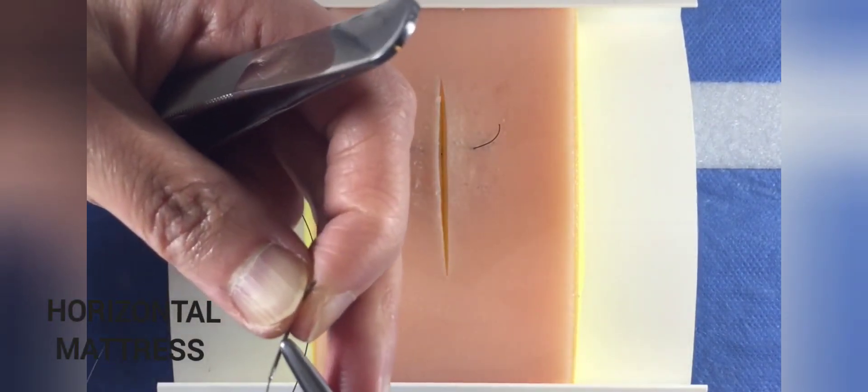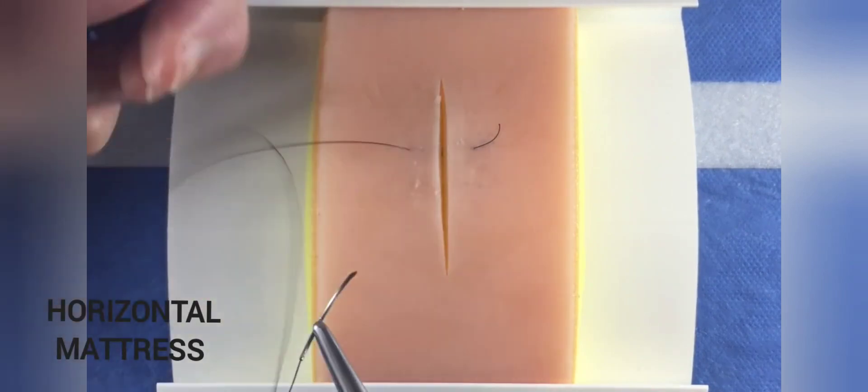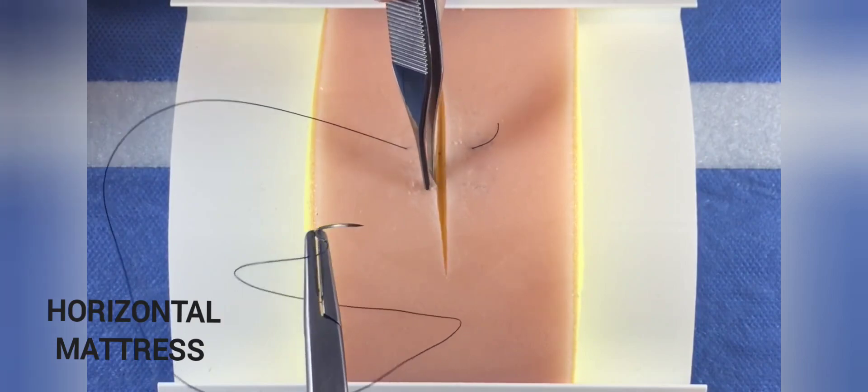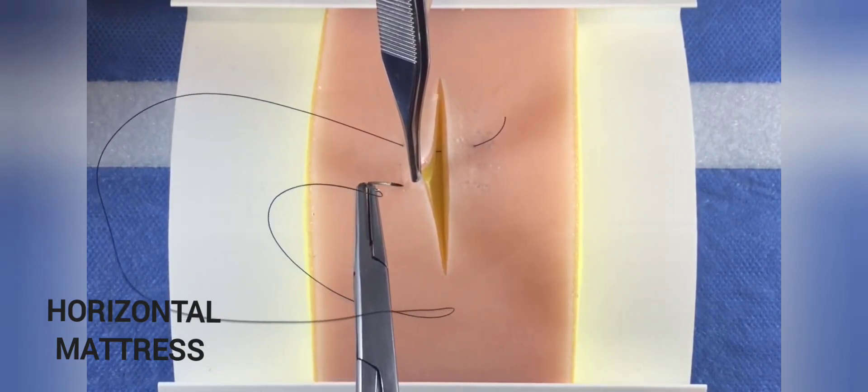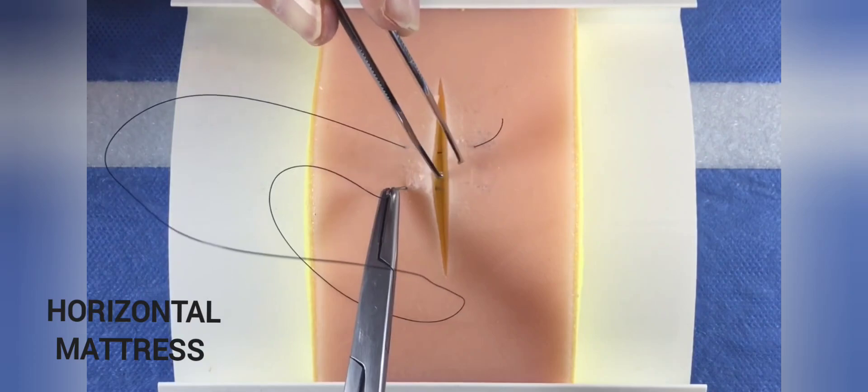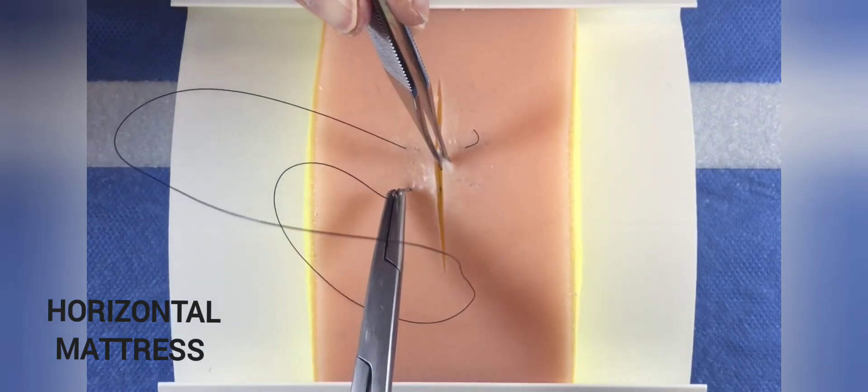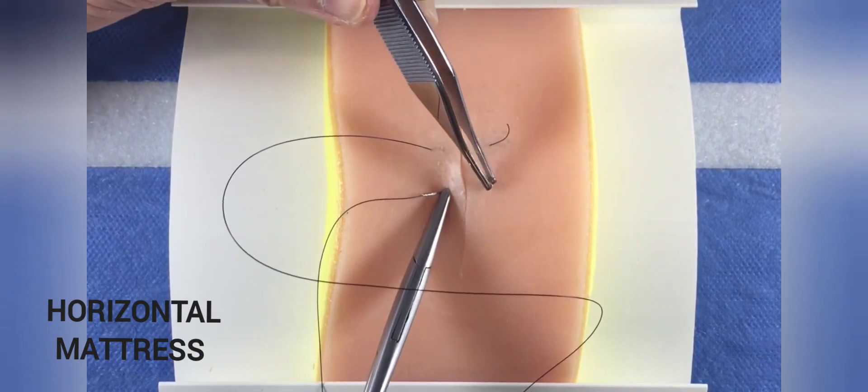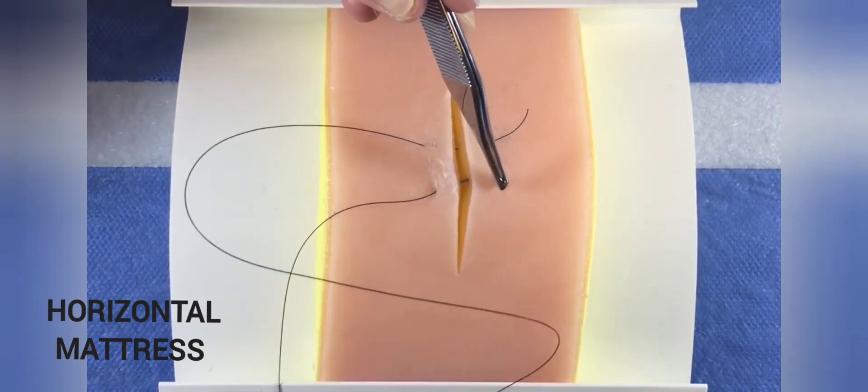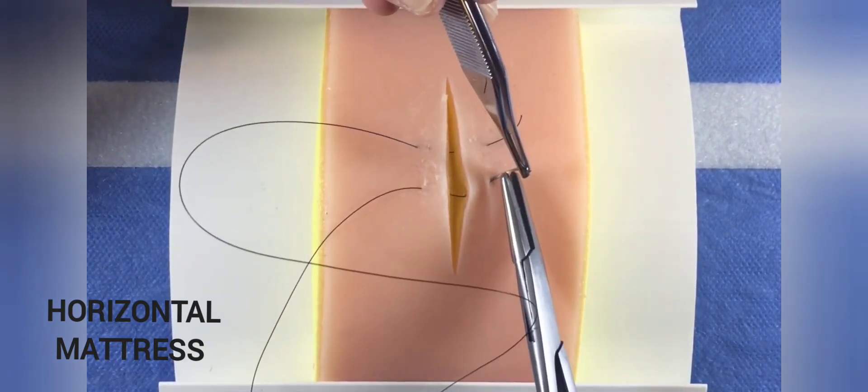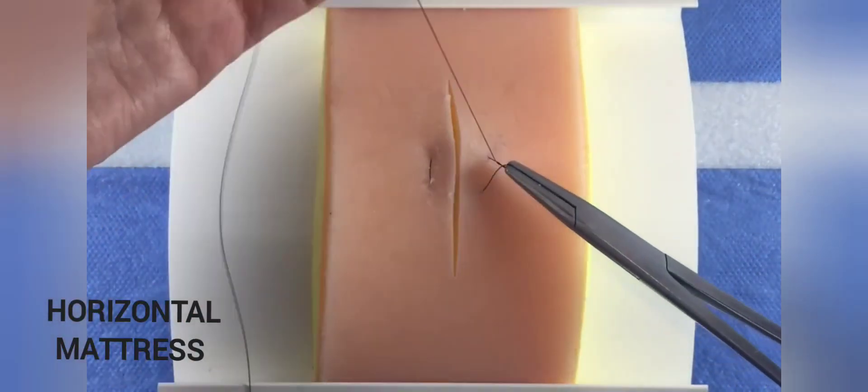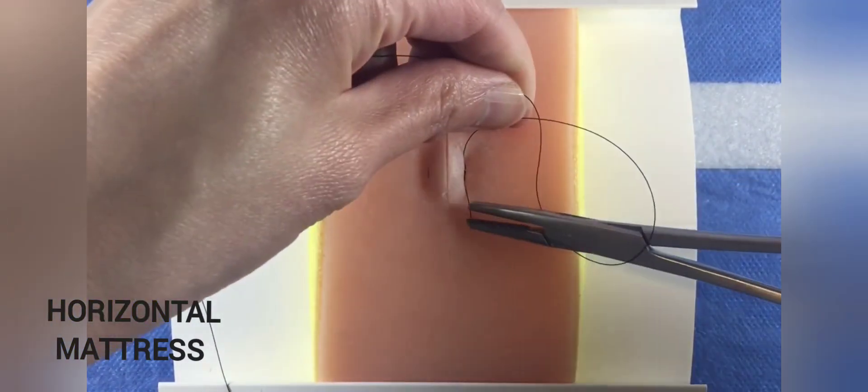However, you may drive the next bite forehand if you have room to adjust and reposition your body. Advance a distance of about one centimeter away from where the needle exited. At the same distance away from the wound edge and at the same depth as the first bite, drive the needle across back to the other side. Tie the suture strands together and cut.